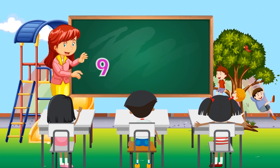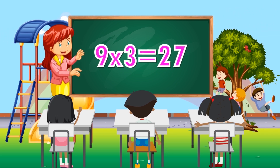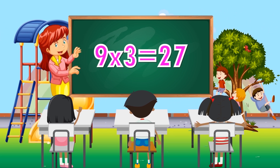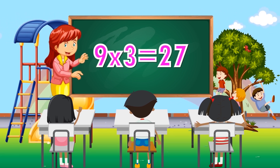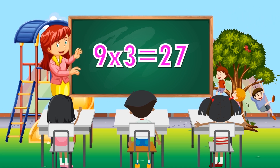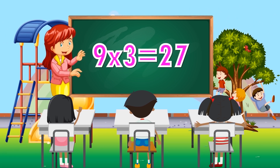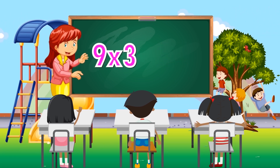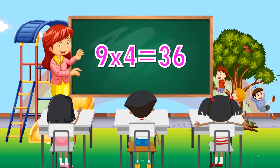9 times 3 equals 27. 9 times 4 equals 36.